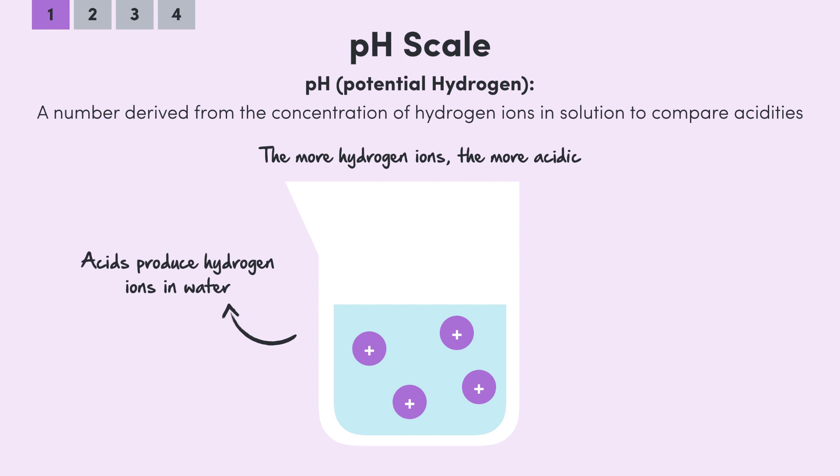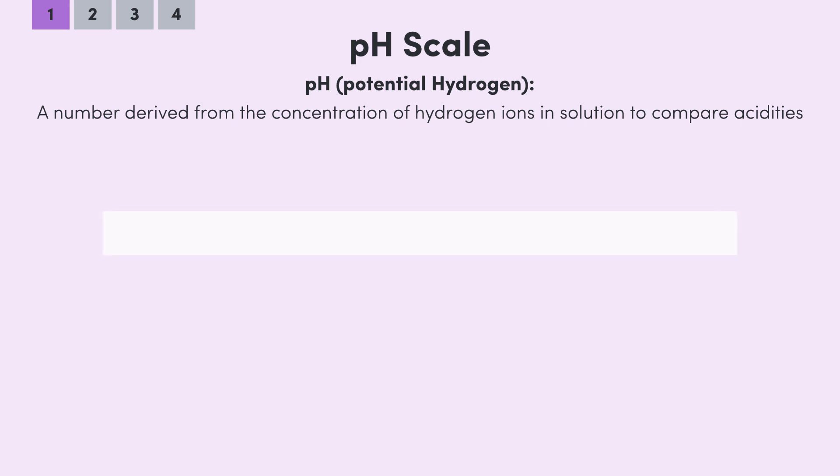So a solution with a high concentration of hydrogen ions is considered acidic and will have a low pH, whilst a solution with a low concentration of hydrogen ions is considered basic and will have a high pH. So to put some numbers to it, a solution with one molar concentration of hydrogen ions has a pH of 0, whilst a solution with a really low hydrogen ion concentration, so let's say 1 times 10 to the power of negative 14 moles per litre, has a pH of 14. I'll come back to this power of negative 14 thing, I promise.